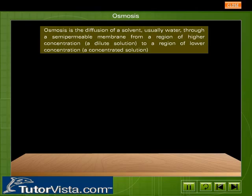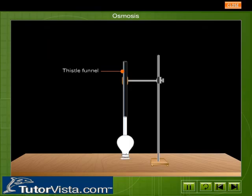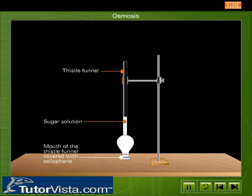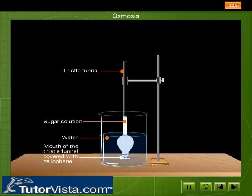Let us perform an experiment to understand this better. Take a thistle funnel filled with sugar solution and close the wide open end of it by securely fastening a cellophane paper around it. Suspend the funnel in a beaker containing water by fixing the funnel to a supporting stand. Note down the initial level of the solution in the funnel.